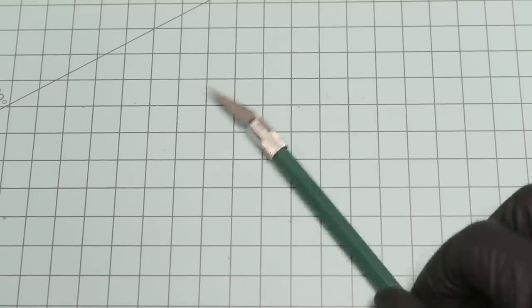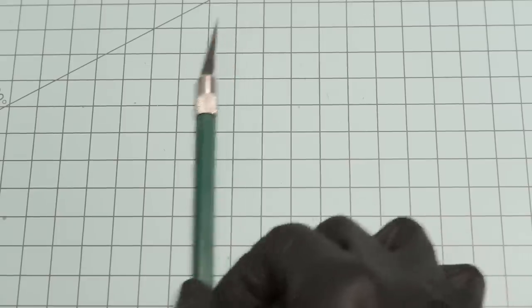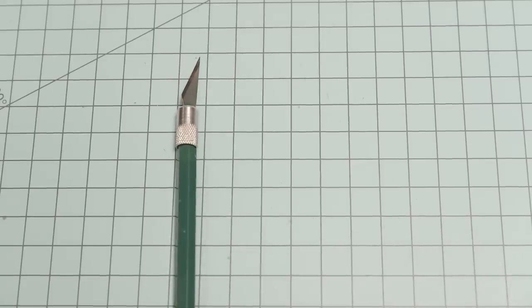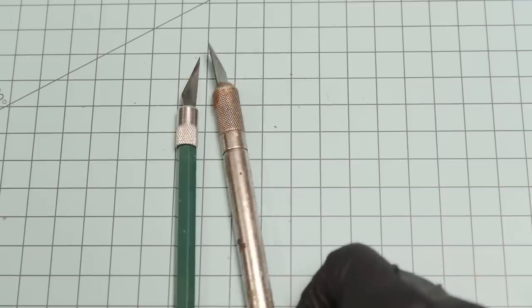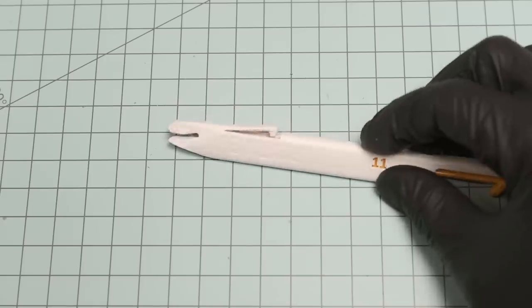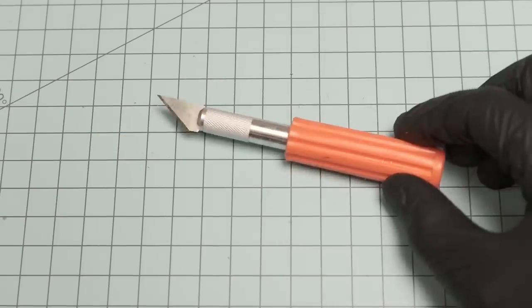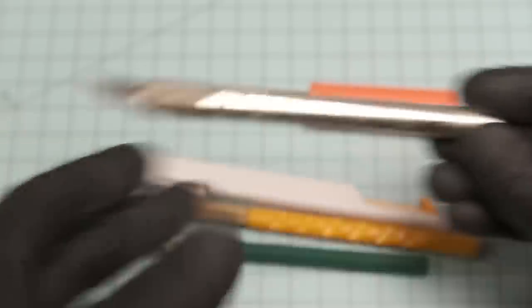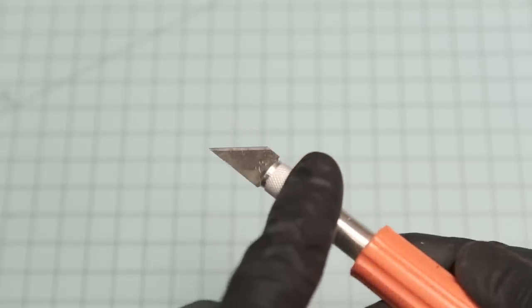We're just going to need a few little things to do this project. Mainly, I'm going to be using an Xacto knife, also known as a hobby knife. You can use a pin blade or any hobby knife you've got. And always be careful with these sharp blades like that.